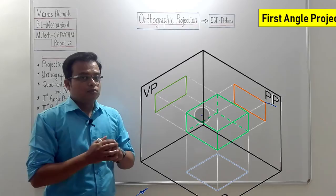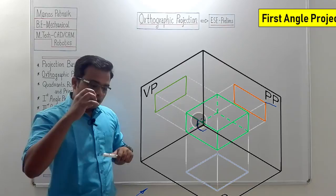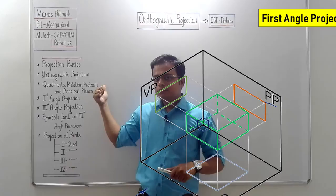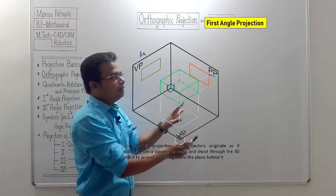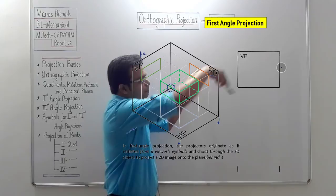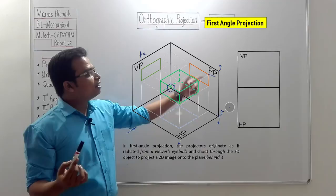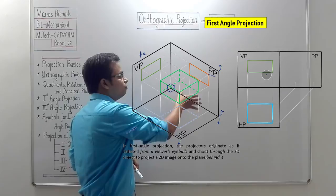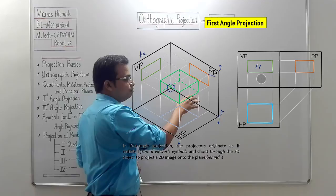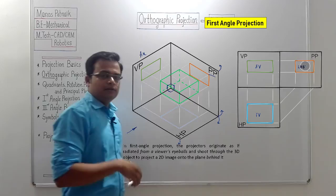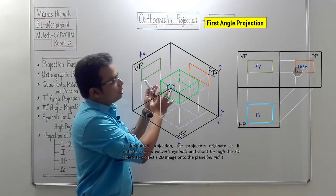Since we can't keep the planes folded, we follow the rotation protocol. Fix the VP and rotate the horizontal plane clockwise by 90 degrees — both VP and HP become coplanar. Then rotate PP anticlockwise by 90 degrees — it becomes coplanar with VP and HP as well. On the drawing sheet, the front view is in the middle, the top view is below, and the left-hand side view is to the right of the VP.